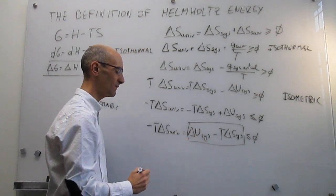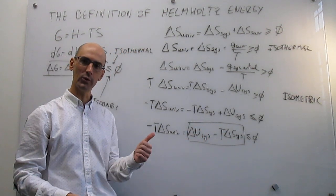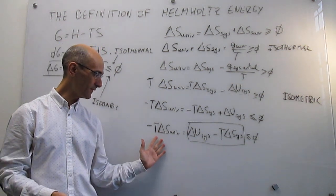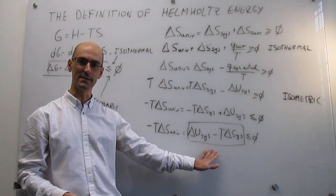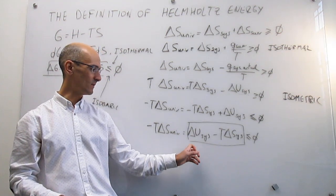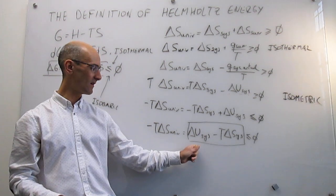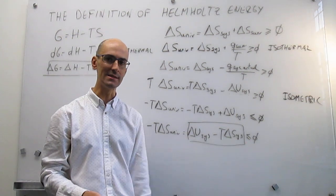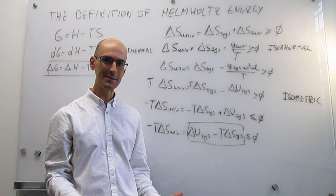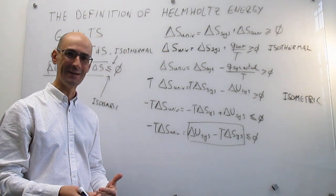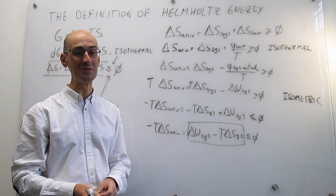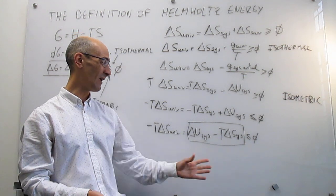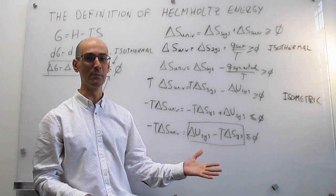Notice that now what you have is that the second law, if you're working at constant temperature and constant volume, can be defined as only depending on the system. That is just going to be the balance of the change in internal energy of the system minus the temperature times the change in entropy of the system. In parallel to what we did for Gibbs energy, we can now introduce a new thermodynamic variable.